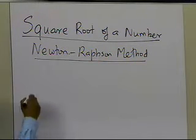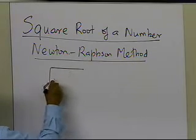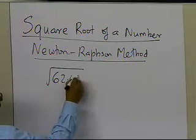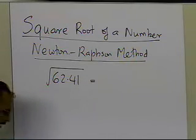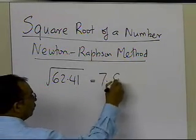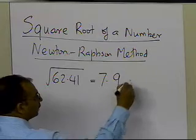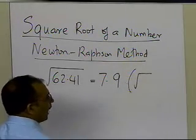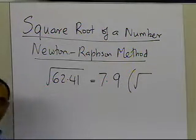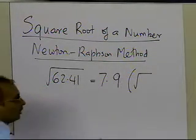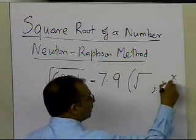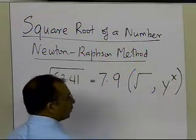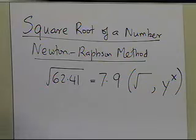Suppose somebody tells you to find the square root of a number like 62.41. You can always go into your calculator, and it will give you the value of the square root to be 7.9. What you are basically using is either the square root key on your calculator, or you are using the y raised to power x key.